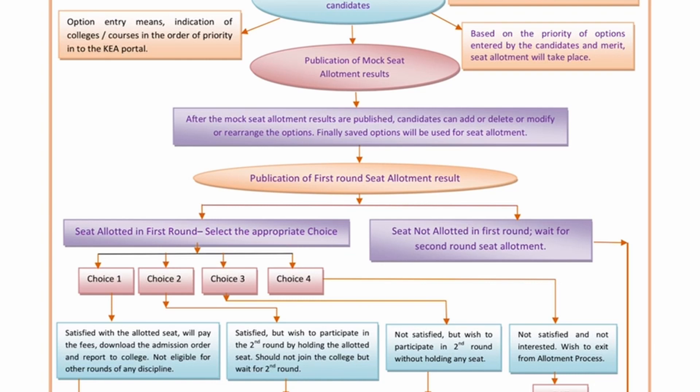I recommend that you choose Choice 1 carefully. If Choice 2 or Choice 3 is satisfied in your rank area, the system will change accordingly. If your Choice 2 is satisfied, you can still participate in the second round by holding the allotted seat. If you have an allotted seat, you can hold it and try to get a better seat.